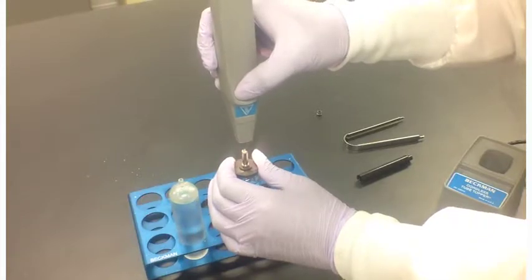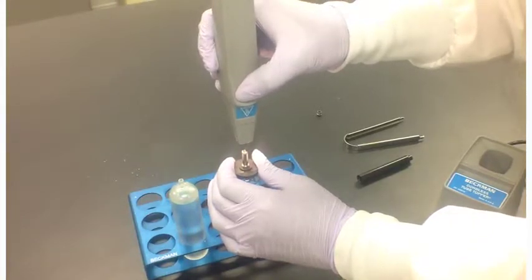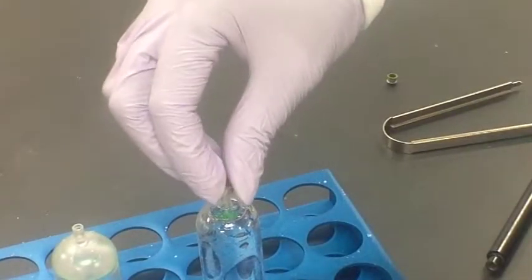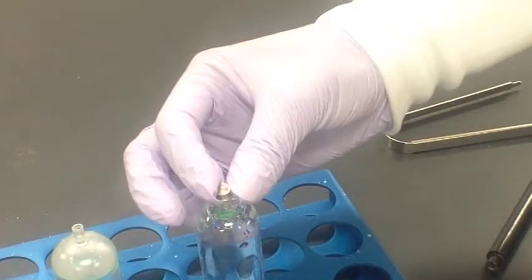Apply the tip of the tube topper vertically to the seal former. Press down gently for about 10 seconds. The seal guide should move down the tube stem until it rests on the tube shoulder.